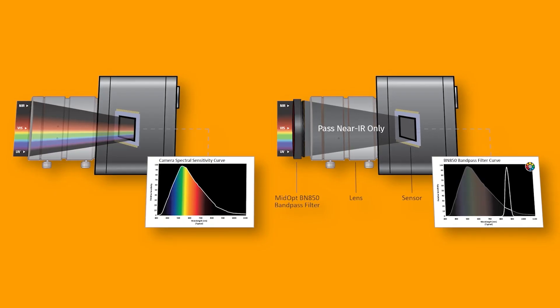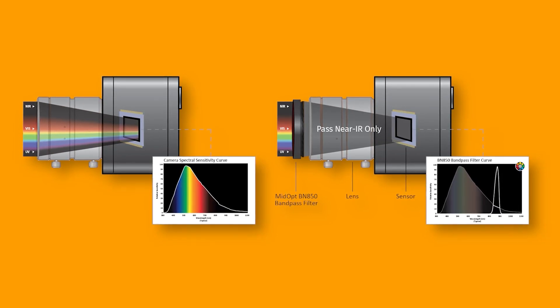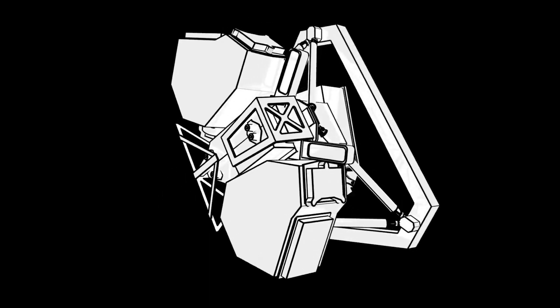It is important to mention that these discoveries were made possible with the help of two pieces of equipment on board the Webb: the near-infrared camera, aka NIRCam, and the near-infrared spectrograph, often referred to as NIRSpec.